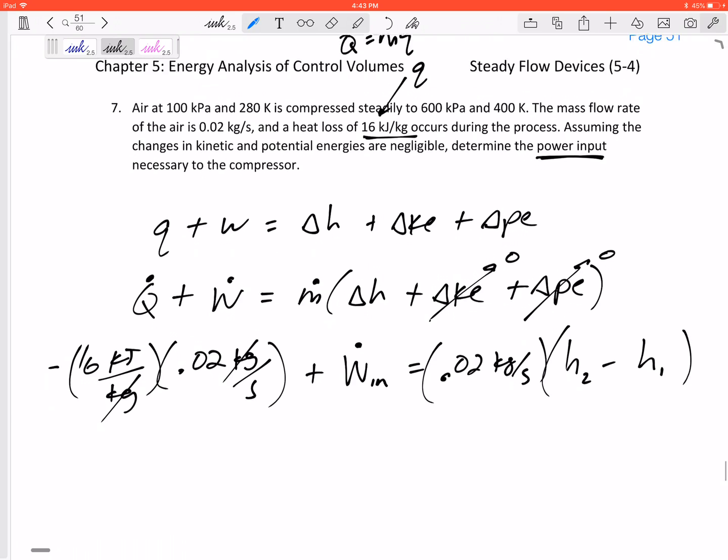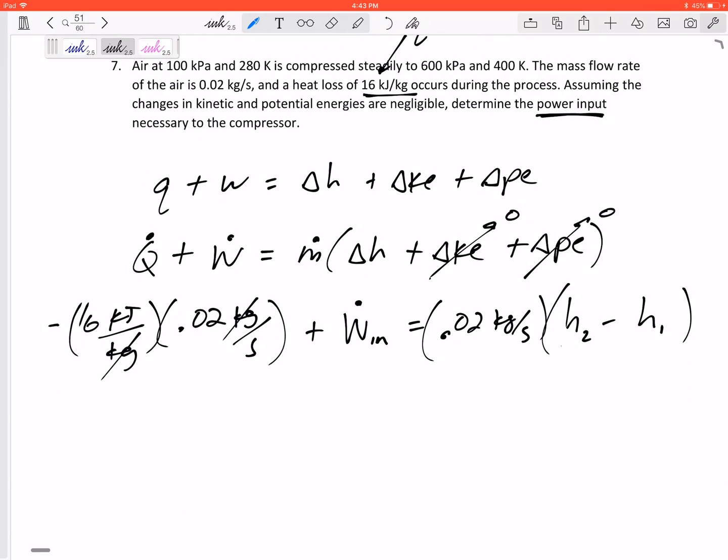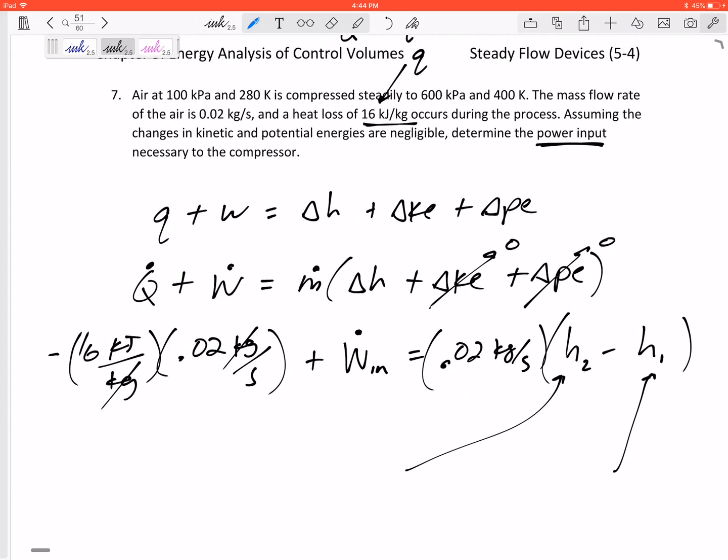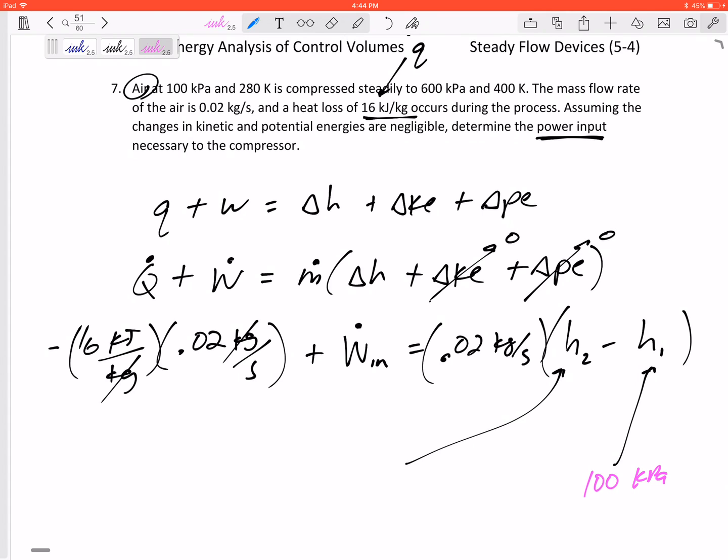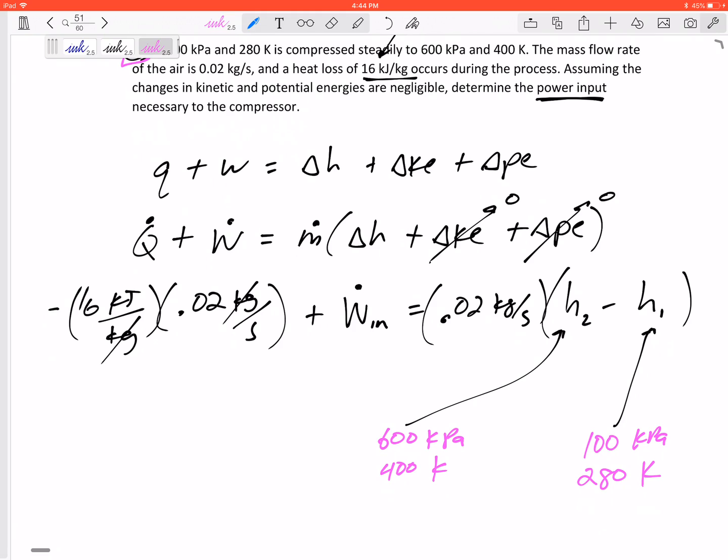That's the left inside my equation. Times 0.02 kilograms per second times h2 minus h1. I bet we can figure out these h's. For h1, it's air at 100 kPa and 280 Kelvin. h2 was at 600 kPa and 400 Kelvin. Now it is air, so actually the only thing I needed were the temperatures. The properties, if we look on the property tables, Table A17 because we're looking at air.